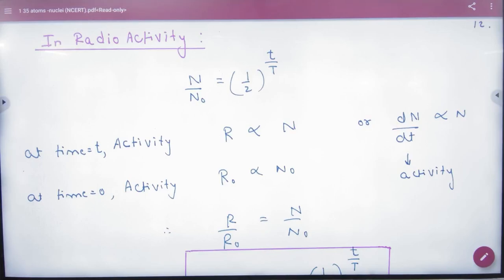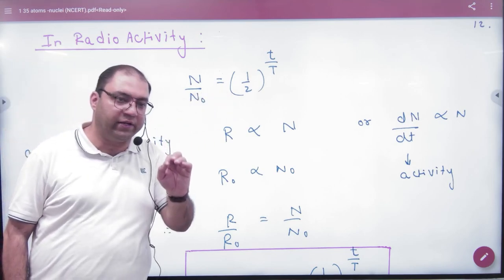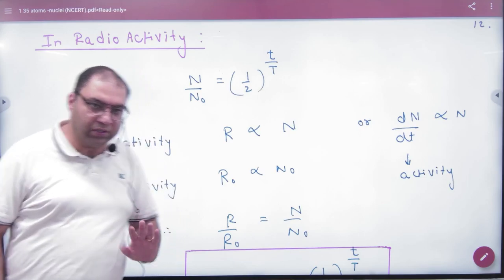In radioactivity, we had a relation of N and N₀. What is N by N₀? Half raised to power small n. Small n is small t by capital T. This was done.